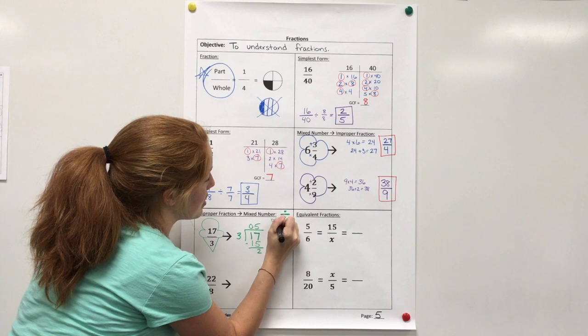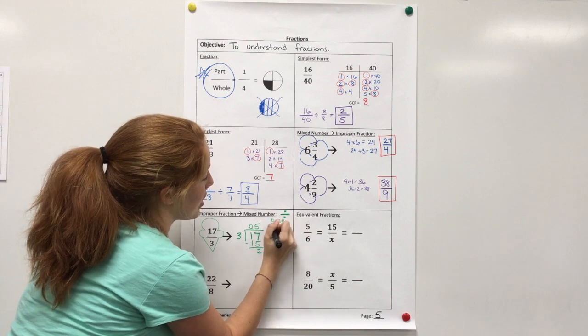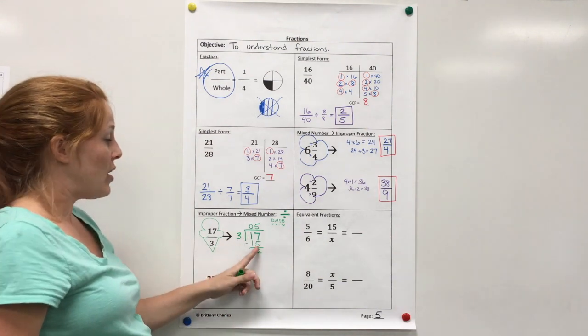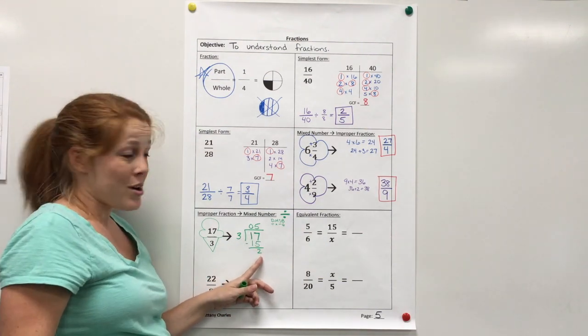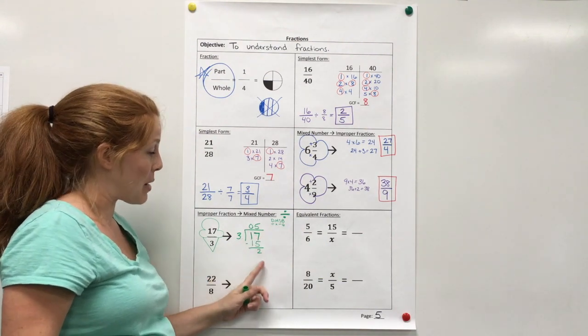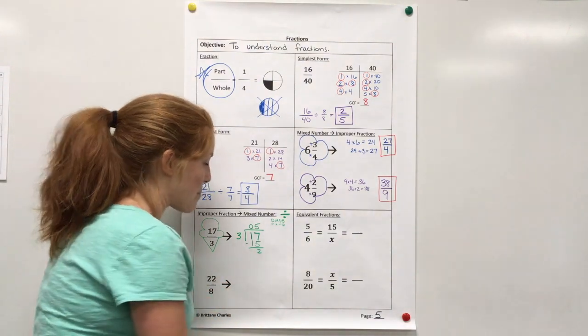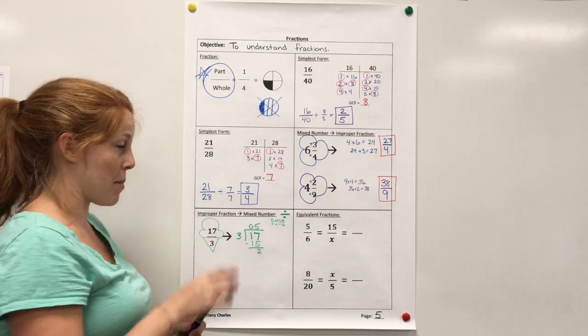Remember, you can always use your D, M, S, B, divide, multiply, subtract, bring down. Okay, now, I'm not going to go any further. I've divided all that I can, and I'm left with the remainder. So I'm going to stop there. And I make a little backwards V to remember how this goes.